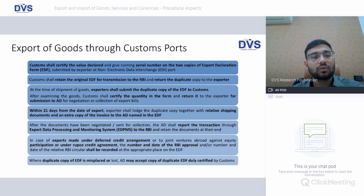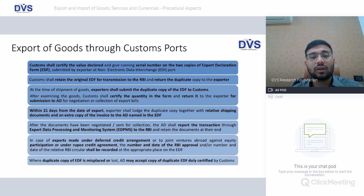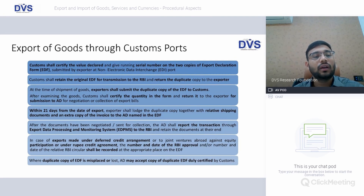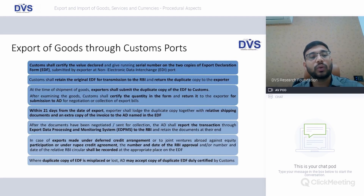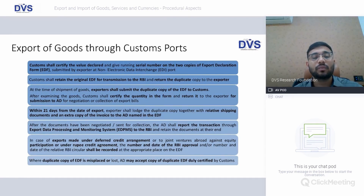For export of goods through customs at non-EDI ports, customs shall certify the value declared and provide a serial number on two copies of the EDF form submitted by the exporter. Customs shall retain the original EDF for transmission to the RBI and return the duplicate copy to the exporter. The exporter shall submit the duplicate copy to customs, which will certify the quantity and return it to the exporter for submission to the AD bank. Within 21 days from the date of export, the exporter shall lodge the duplicate copy with shipping documents and an extra invoice copy to the authorized dealer bank named in the EDF.